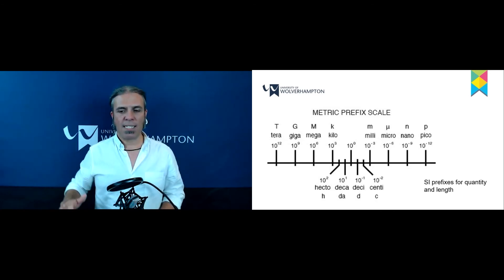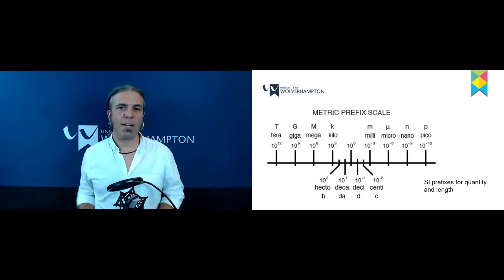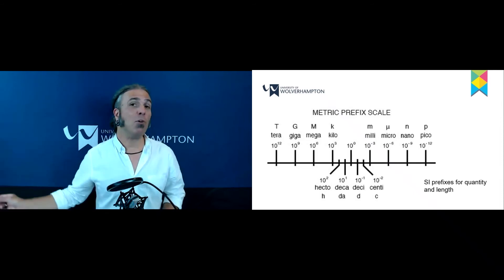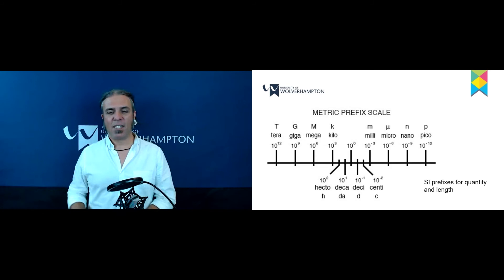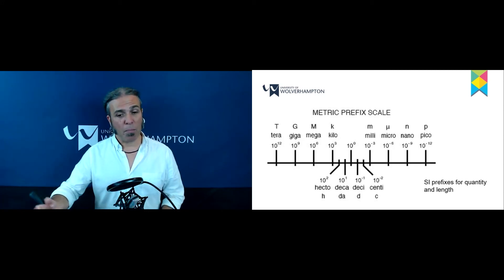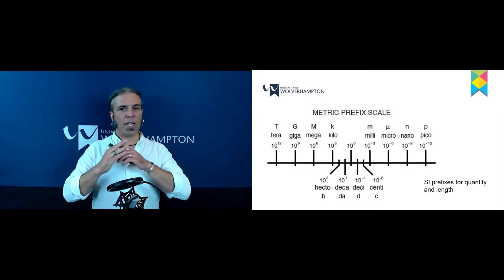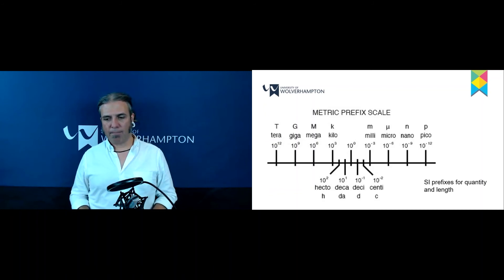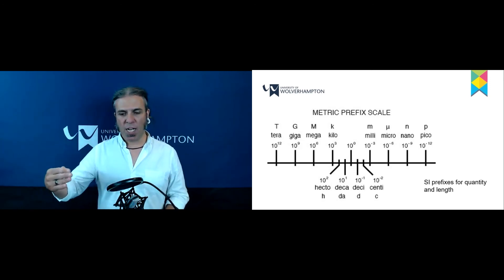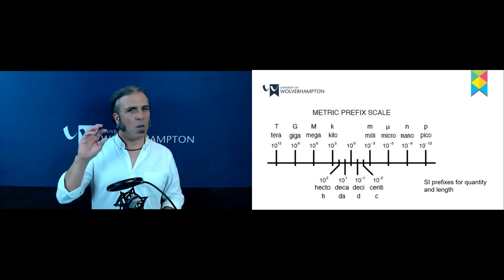At 10⁻¹⁵ we have something called femto — you can have femtometres, femtograms, and so on — which is very very small. Right after that there's an even smaller one called atto. Moving back up the line, we've got things you might recognise like kilo (as in kilograms), mega, giga (like gigabytes on your computer), and tera (like terabytes). There are some prefixes we don't use very much, such as deca, deci, and hecto, though you might occasionally see centilitres or decilitres.